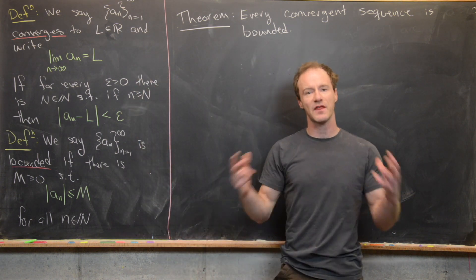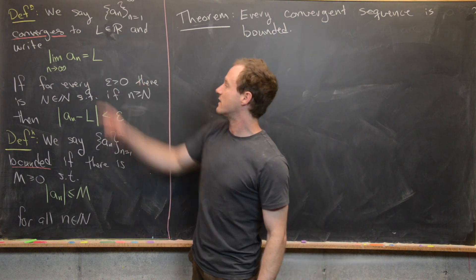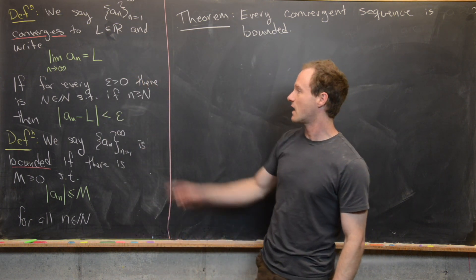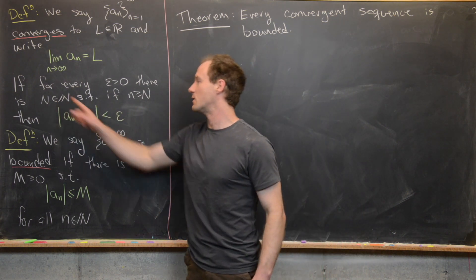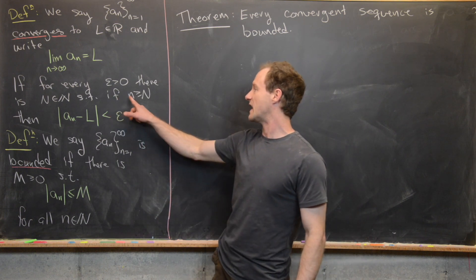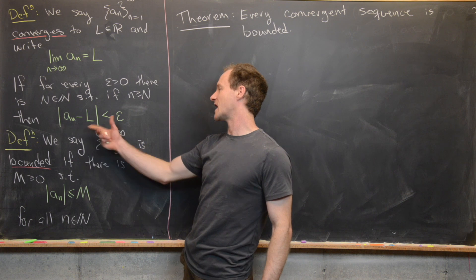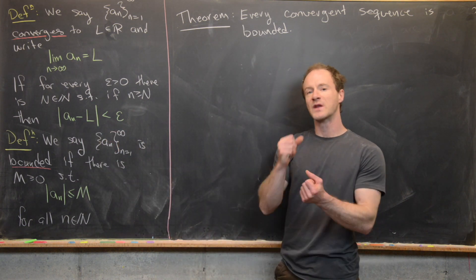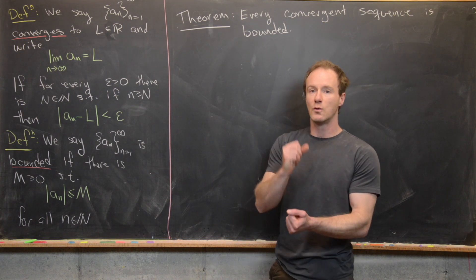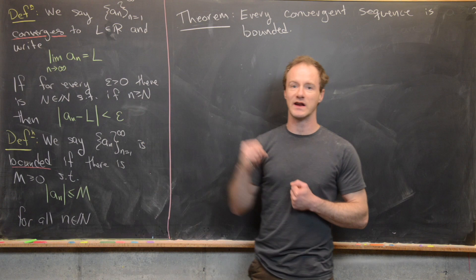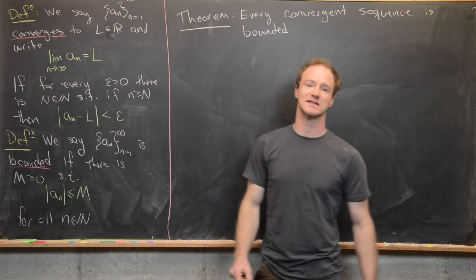We write the limit as n goes to infinity of a_n equals L, if for every epsilon bigger than 0, there is an N which is a natural number, such that if little n is bigger than N, then |a_n minus L| is less than epsilon. This means that for any very small number epsilon, we can find a point after which every part of the sequence is very close to this limit value L.